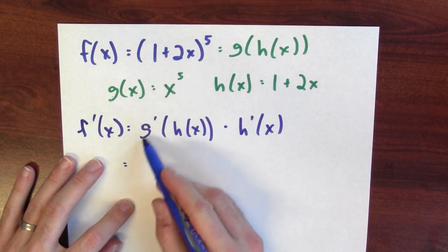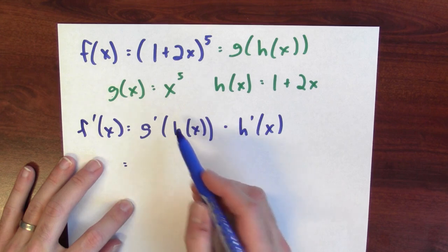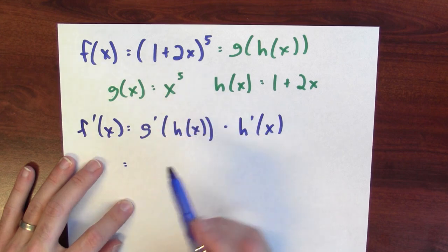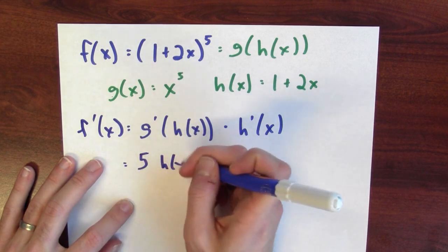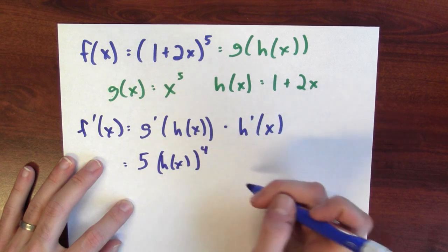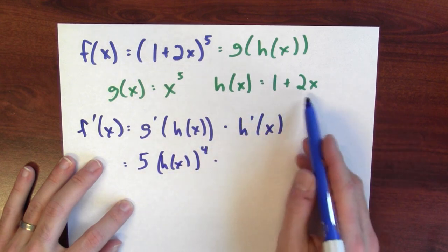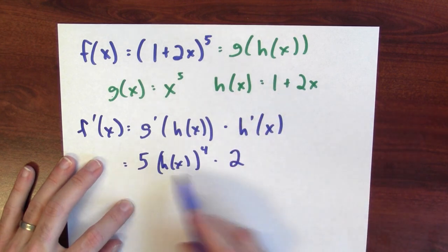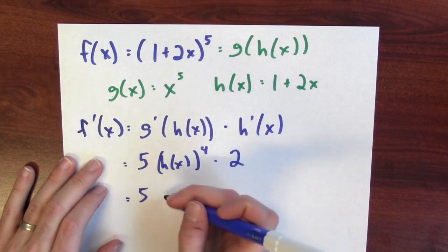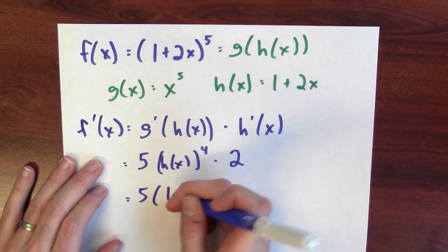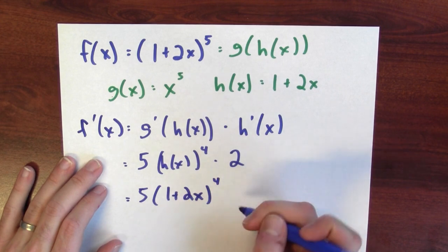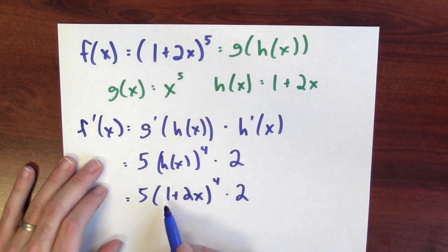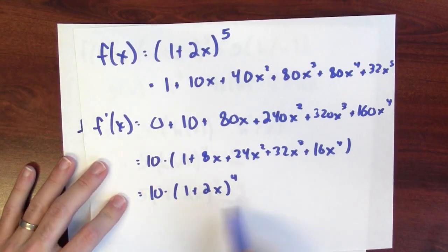In this case, what's the derivative of the outside function? The derivative of g is 5x to the fourth. So I'm going to take that but evaluate it at h, 5h of x to the fourth. I'm going to multiply it by the derivative of h. What's the derivative of h? Well, it's 2. Whoa, look at what I've got here. I've got 5h of x is 1 plus 2x to the fourth times 2. That's 10 times 1 plus 2x to the fourth. That's exactly what we calculated before.